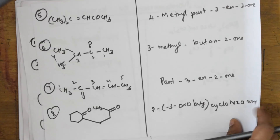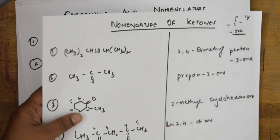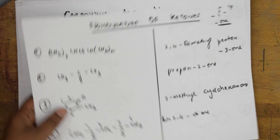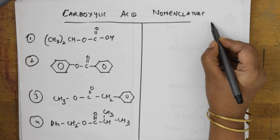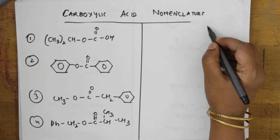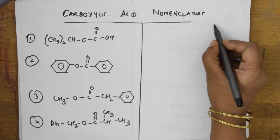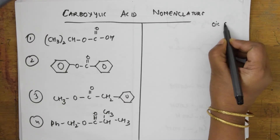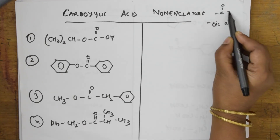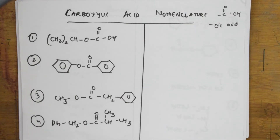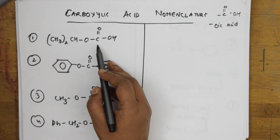Now let us do the nomenclature of carboxylic acids. The suffix used is '-oic acid' or 'carboxylic acid'. The functional group present is C double bond O with OH — a carboxyl group. Here also the functional group carbon must be named first.